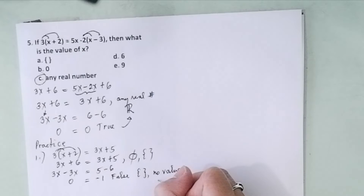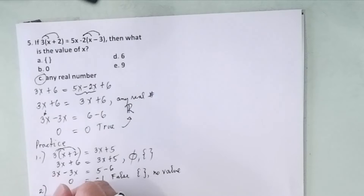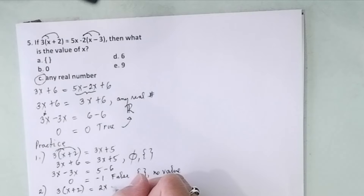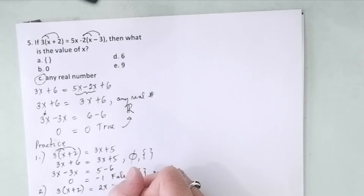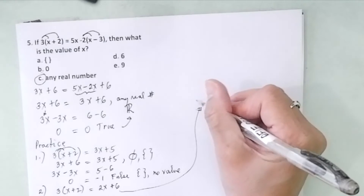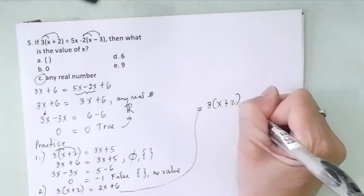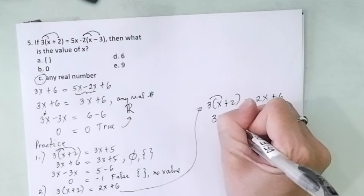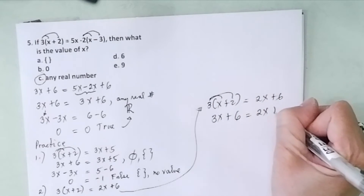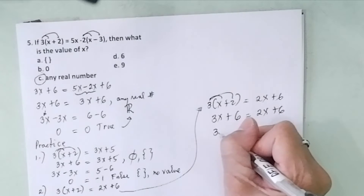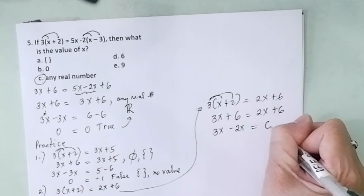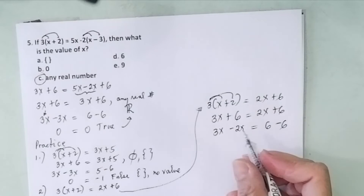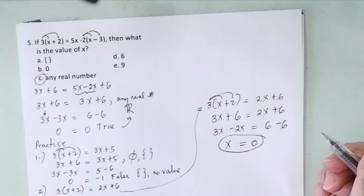Now let's say you're given 3 times the quantity (x plus 2) equals 2x plus 6. Distributing: 3x plus 6 equals 2x plus 6. Subtract 2x from both sides: 3x minus 2x equals 6 minus 6, so you get x equals 0.